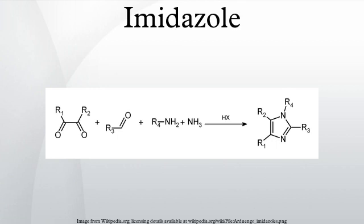Imidazole was first reported in 1858, although various imidazole derivatives had been discovered as early as the 1840s. Its synthesis used glyoxal and formaldehyde in ammonia to form imidazole. This synthesis, while producing relatively low yields, is still used for creating C-substituted imidazoles. In one microwave modification, the reactants are benzil, benzaldehyde, and ammonia in glacial acetic acid, forming 2,4,5-triphenylimidazole.